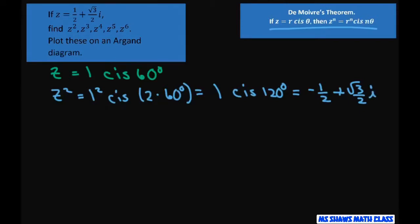Now let's do z³. You just use the formula. That's 1³ cis (3 × 60°), which equals 1 cis 180°, which equals -1.